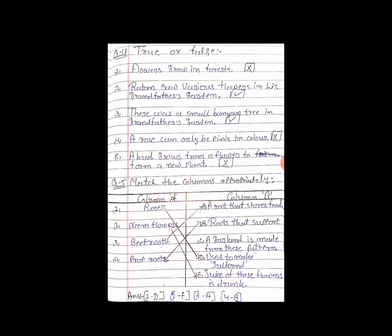Now number 5 — A seed grows from a flower to form a new plant. Is it right? No. So a square sign in the box. Okay. So question 4 is done.